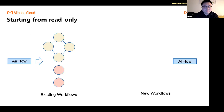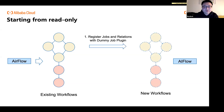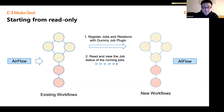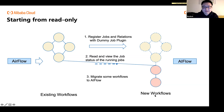For migration paths from existing Airflow: first, register jobs and relations with dummy job plugins in AI Flow, creating a read-only workflow that gives you an overview of the entire workflow in your system and lets you view job status of running jobs. After a while, you can choose to migrate parts of your workflow into AI Flow. This is how people typically migrate from existing Airflow to AI Flow.